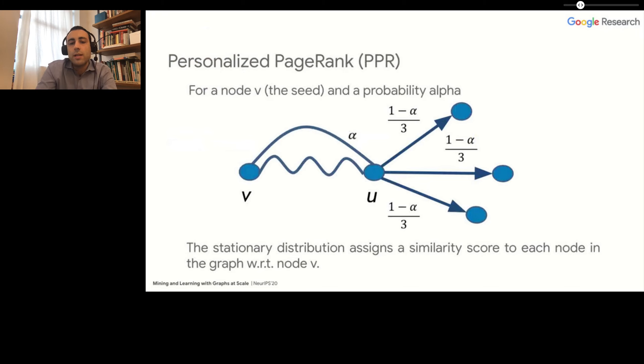This is a stochastic process, but it's possible to show that there is a unique stationary distribution, and this stationary distribution assigns a score to all nodes in the graph, which is given exactly by the probability of being visited by this random walk starting from V. This creates a similarity ranking for node V and measures the similarity from V to any other node in the graph.